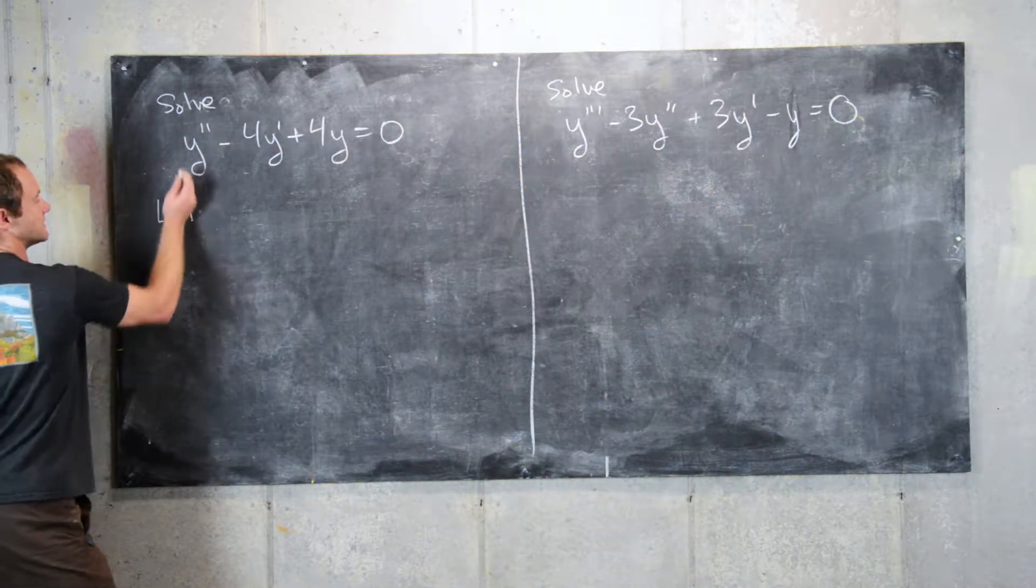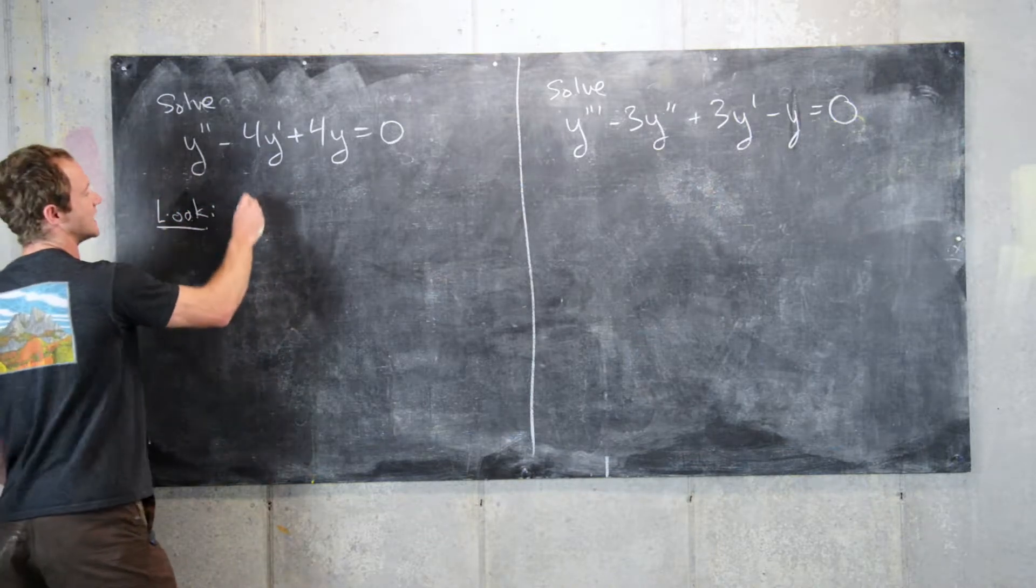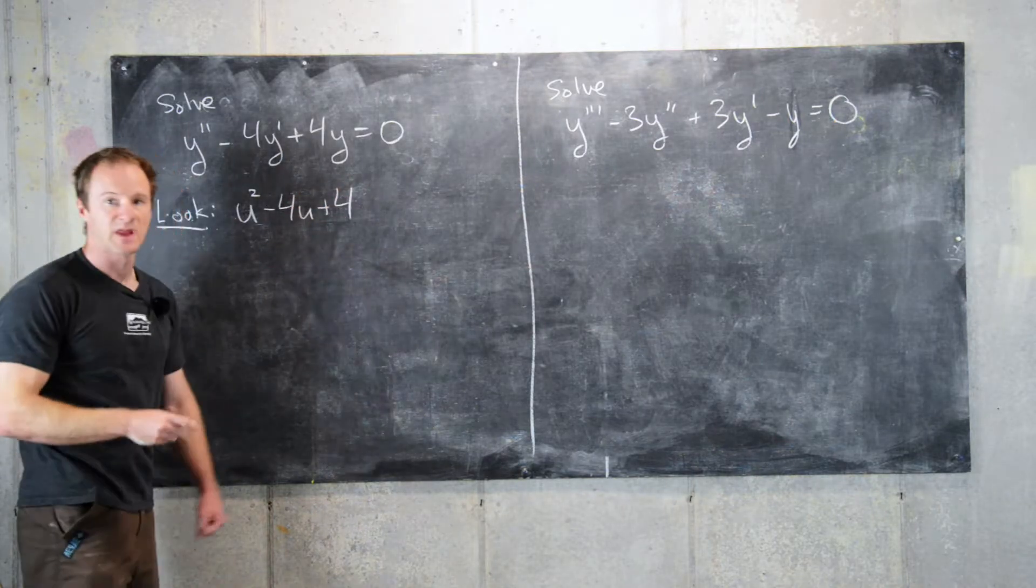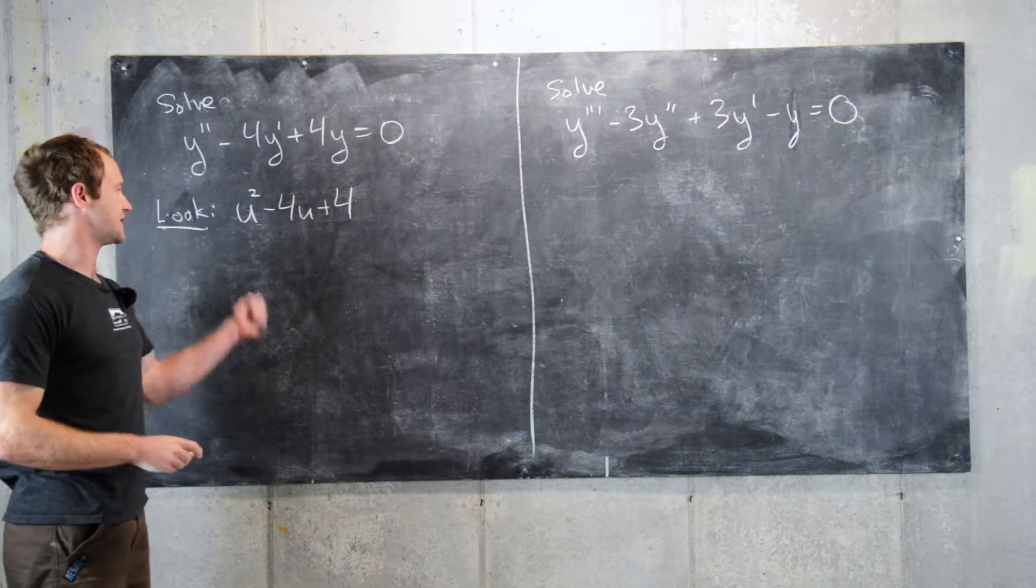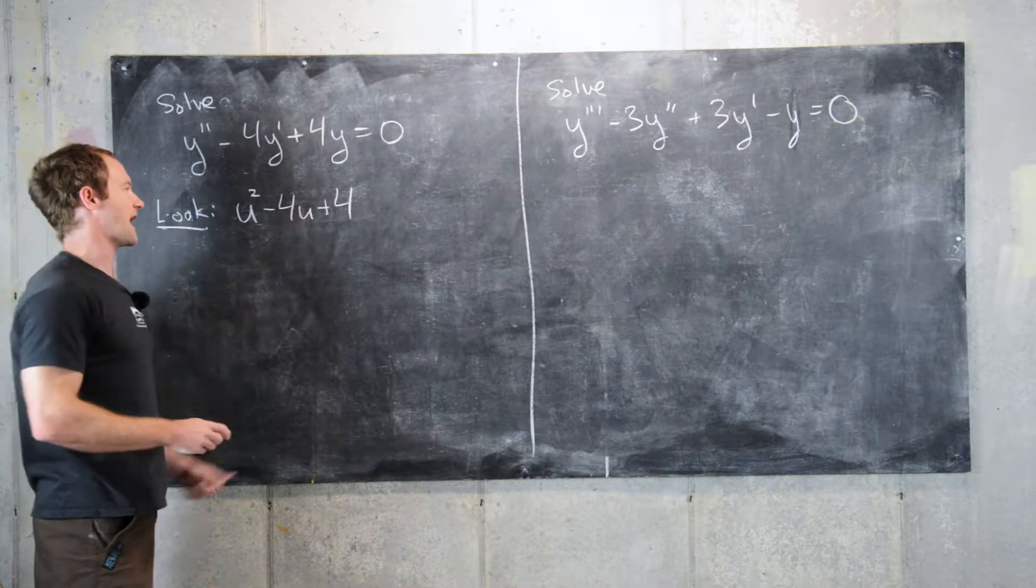So it's important to consider the companion polynomial. We'll look at u squared minus 4u plus 4, and we'll see if we can factor that and find its roots. And we can factor it because we need two numbers that multiply to positive 4 and add to negative 4.